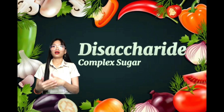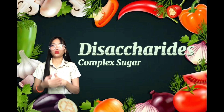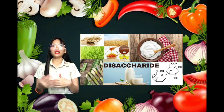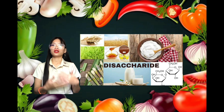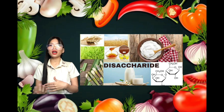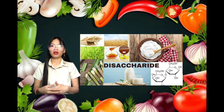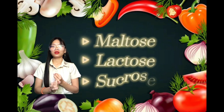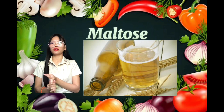Disaccharide is also called complex sugar. It is a combination of two monosaccharides through a condensation reaction. It can be broken down through a hydrolysis reaction. They also have three types: they are maltose, lactose, and sucrose.